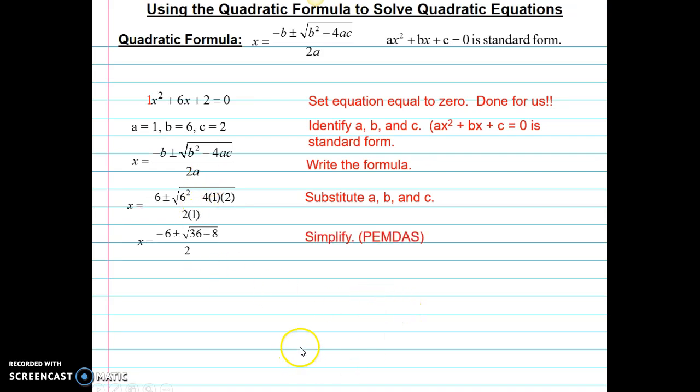Next, I'm going to simplify. 2 times 1 is 2. 6 squared is 36. And 4 times 1 times 2 is 8. I'll simplify again. 36 minus 8 is 28. Next, I'll take the square root of 28, which is 5.29.